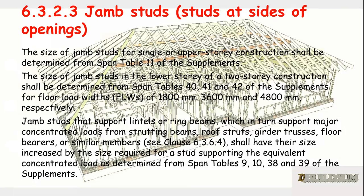Rule 6.3.2.3 for jam studs says that jam studs for single or upper storey construction shall be determined from span table 11 of the supplement. However, if you are looking for the lower storey of a two storey construction, you need span table 40, 41 or 42, depending on the floor load widths.